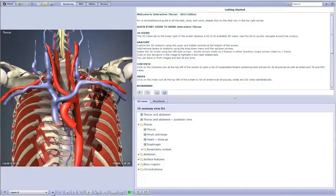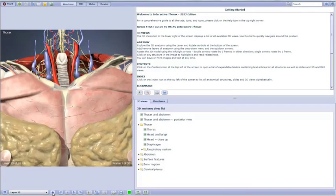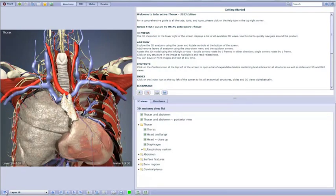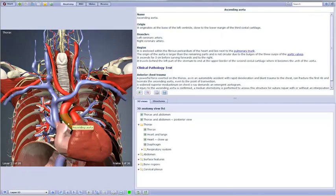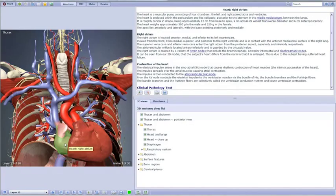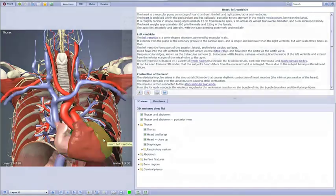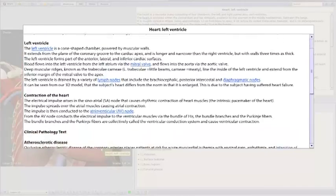Each view has a series of layers that can be added or removed. Unlike other anatomy viewers, every visible structure is clearly and accurately labelled and is accompanied by helpful text to aid reference and teaching.